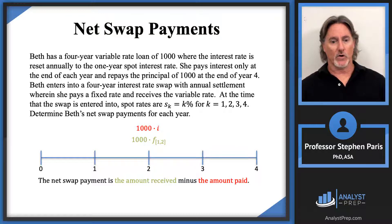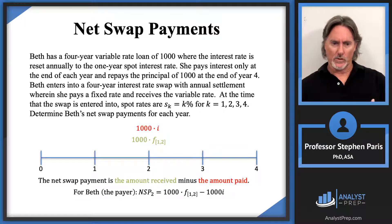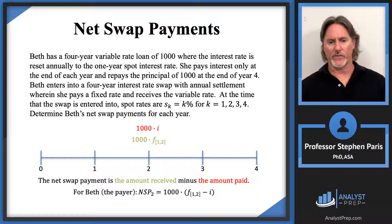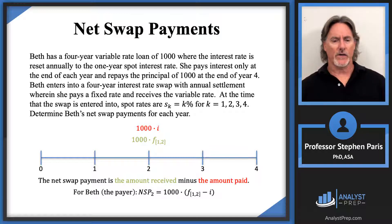For Beth, who is the payer, the net swap payment at time two would be what she's receiving — the 1,000 times the forward rate — minus what she's paying, which is 1,000 times I. You could factor out a 1,000 if you wanted to. This is symbolically what the net swap payment is. Let's go through and numerically get these values and think of it from a numerical calculation instead of just a symbolic formula.